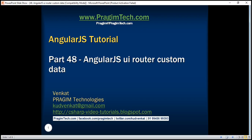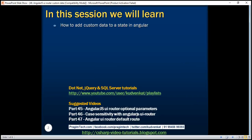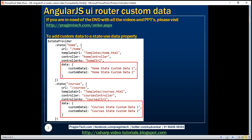This is part 48 of the AngularJS tutorial. In this video, we'll discuss how to add custom data to a state in Angular. To add custom data to a state, we use the data property. In the example here, we are adding some custom data to our home state using the data property.